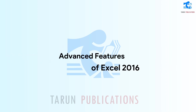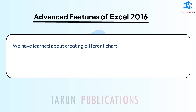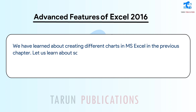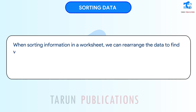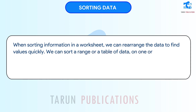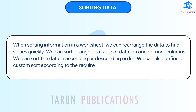Advanced Features of Excel 2016. We have learned about creating different charts in MS Excel in the previous chapter. Let us learn about some features for formatting data in this chapter. When sorting information in a worksheet, we can rearrange the data to find values quickly. We can sort a range or a table of data on one or more columns in ascending or descending order. We can also define a custom sort according to the requirement.